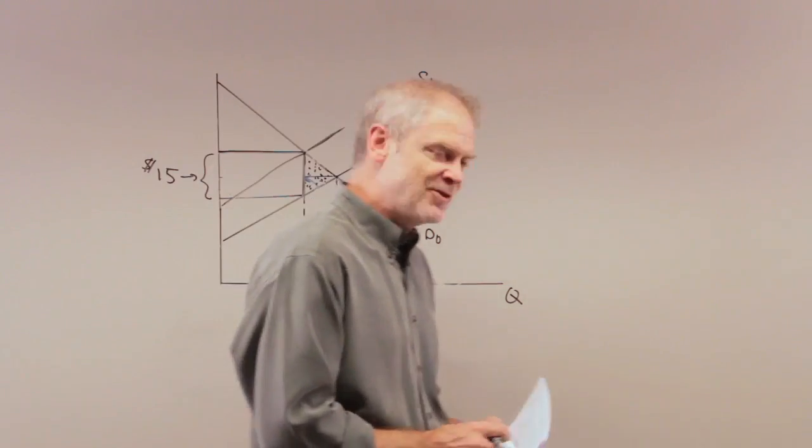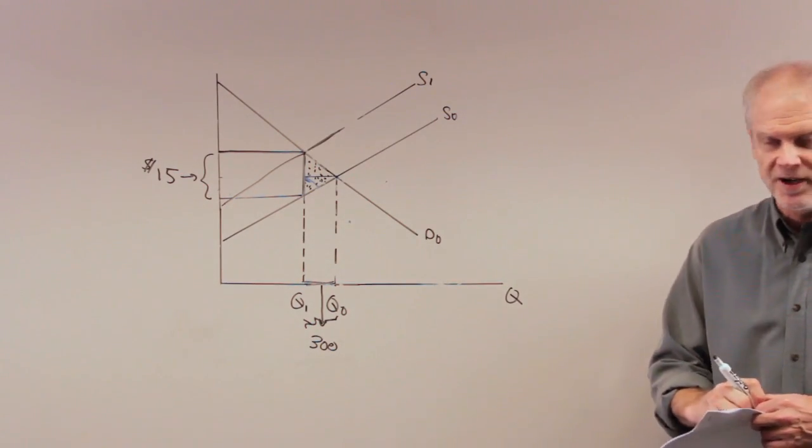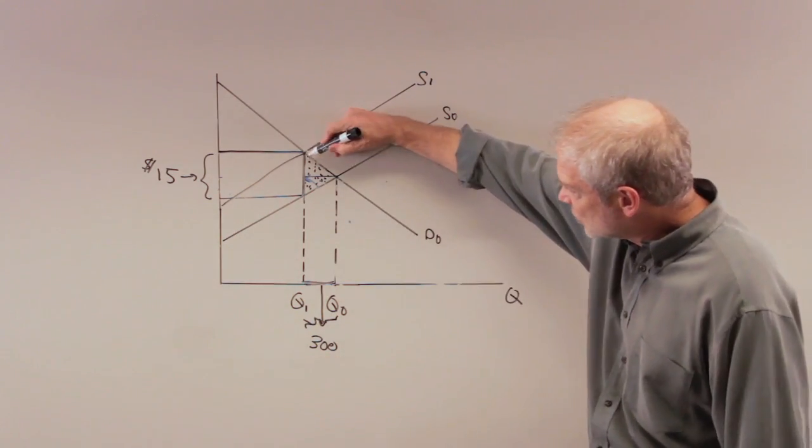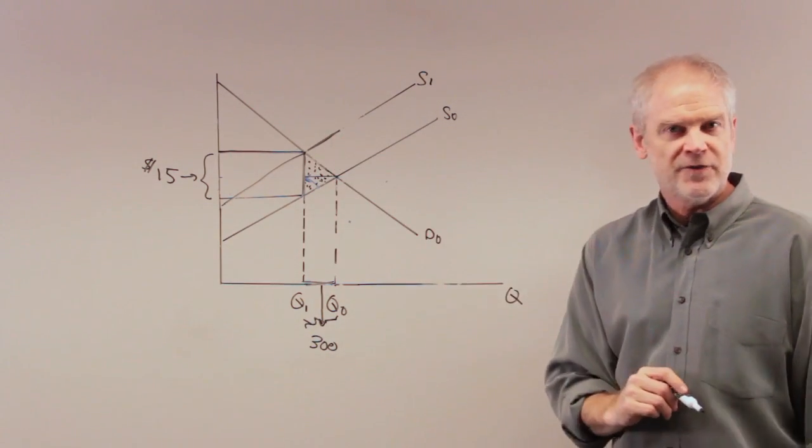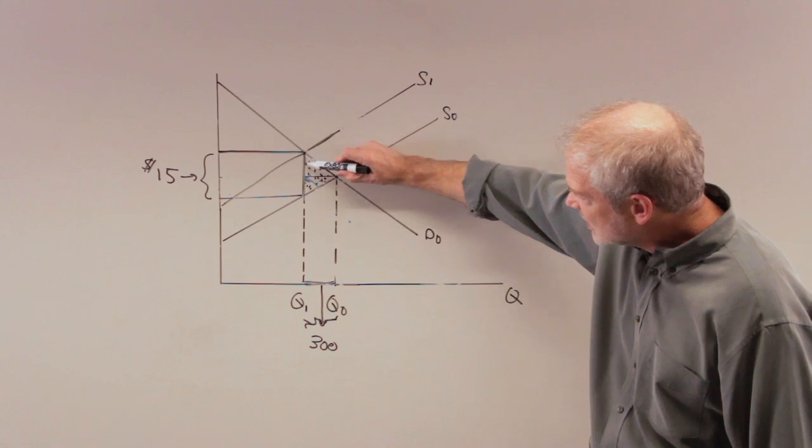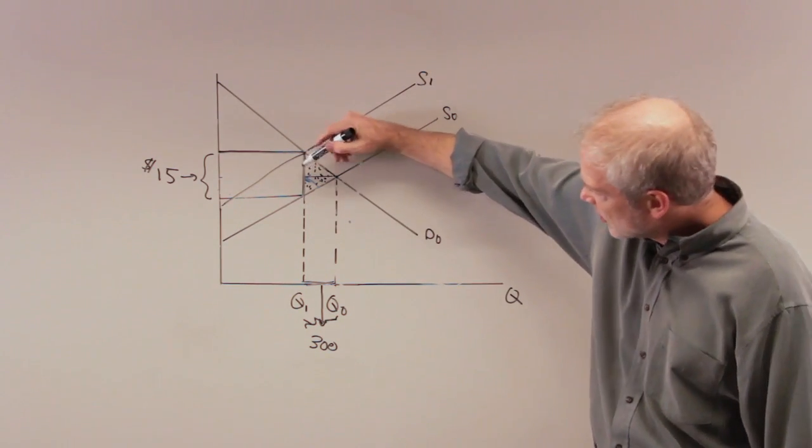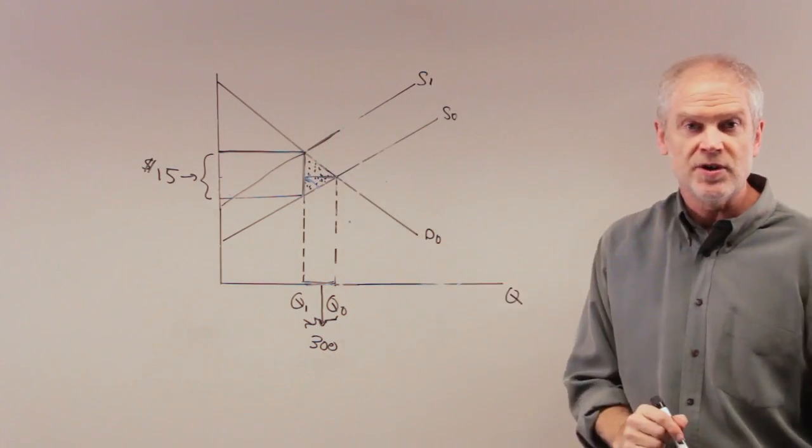So now they're asking you to compute the deadweight loss. It's not that hard once you've drawn the diagram, because now you have to get this triangle right here, and you have all the information you need. You know the base of the triangle is $15. You know the height of the triangle right here is 300 units.